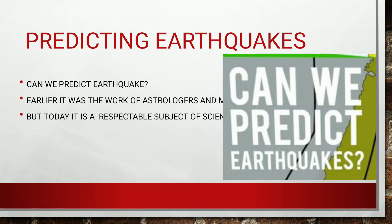Can we predict earthquakes? In the past, earthquake prediction was left to astrologers and mystics, but today it is a respectable scientific pursuit. The Russians were the first to study P- and S-waves in the 1960s, and these waves remain the primary means for seismologists to predict earthquakes. The theory of plate tectonics offers another scientific means of prediction. The Japanese also use methods of measuring changes in sea level and variations in Earth's magnetic field. However, no official method is yet fully proven, as demonstrated by recent earthquakes in Japan, India, and the USA.